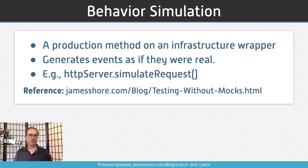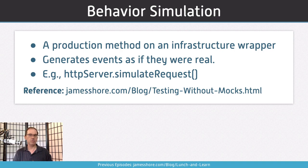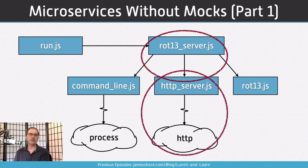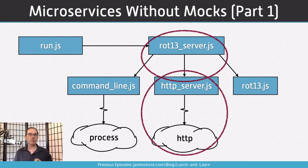One way to handle request testing is with behavior simulation. Behavior simulation is a real production method on our infrastructure wrapper that generates events as if they were real — it runs the exact same code that a real request would run, except it doesn't need a real request. It can start that code manually in our test. So we might have a method like HTTPServer.simulateRequest. Those are the ways we'll build our microservice without mocks: programming by intention, a nullable HTTPServer wrapper, and then next week, behavior simulation.